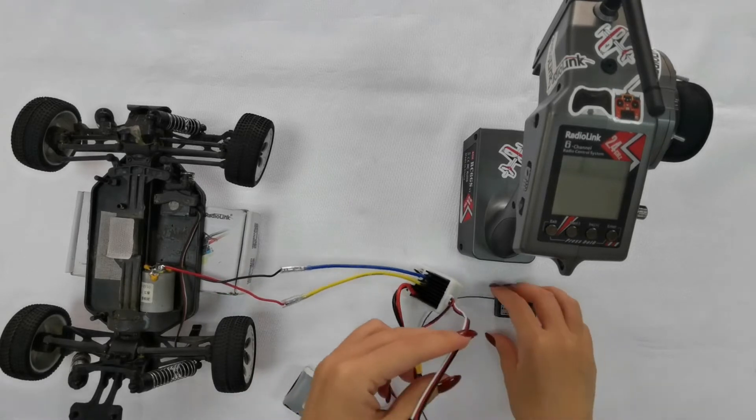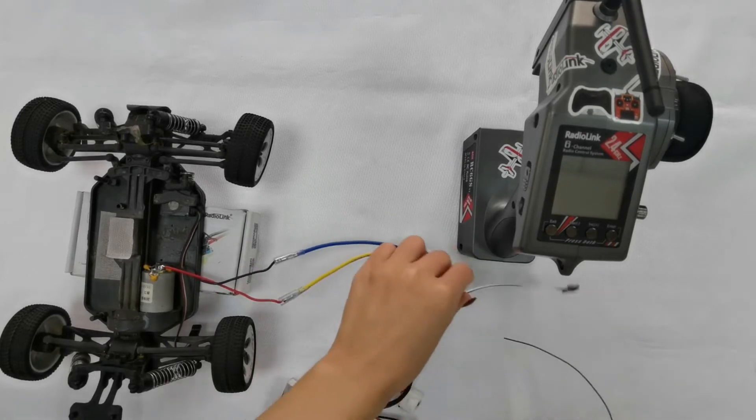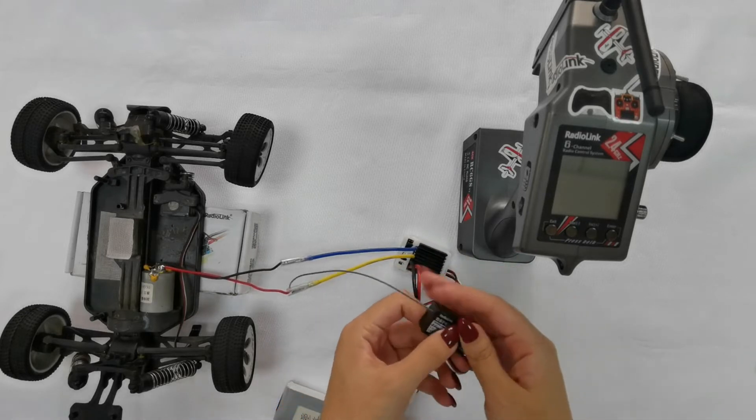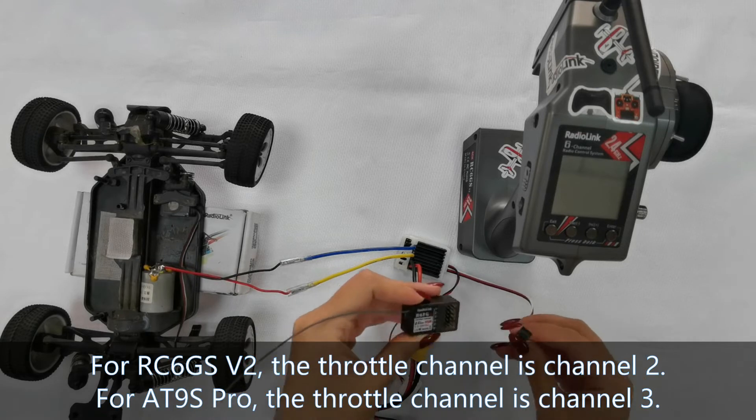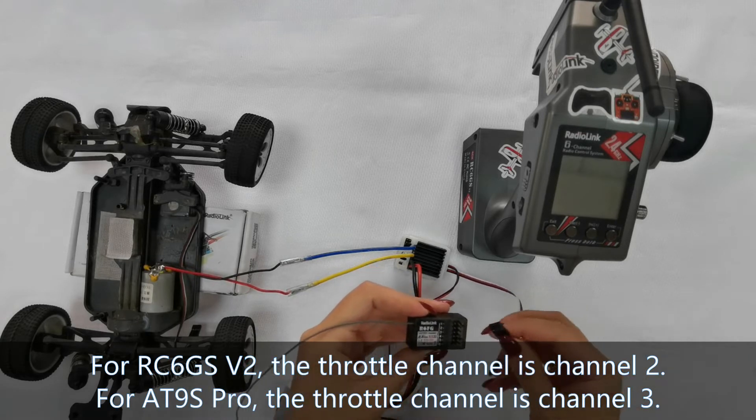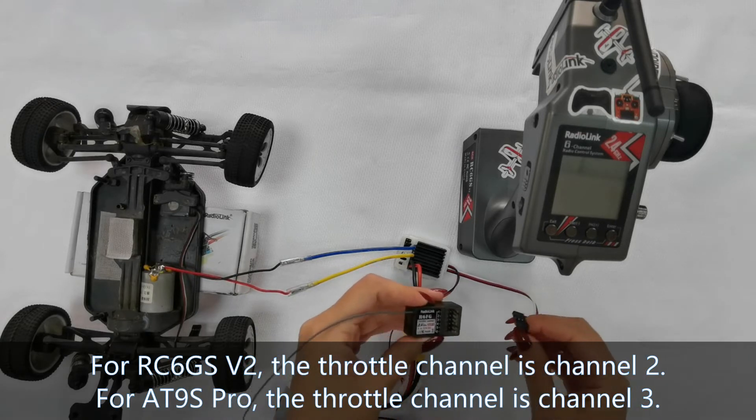Plug the receiver connect cable of ESC into the throttle channel of the receiver. For RC6GSV2, the throttle channel is channel 2.